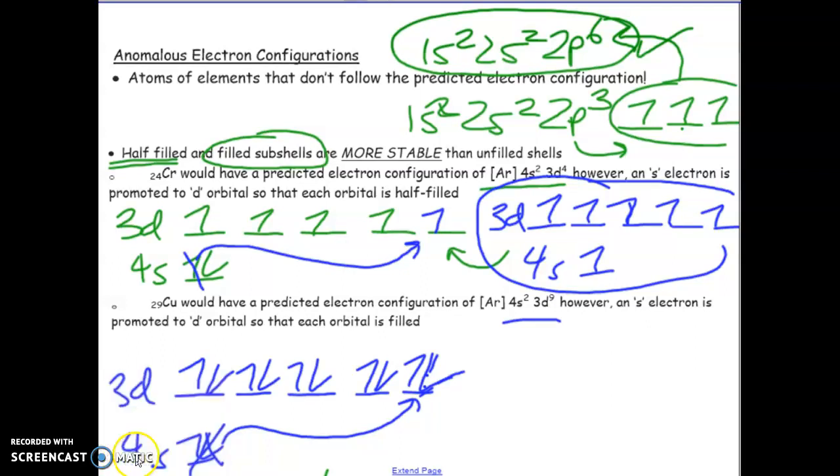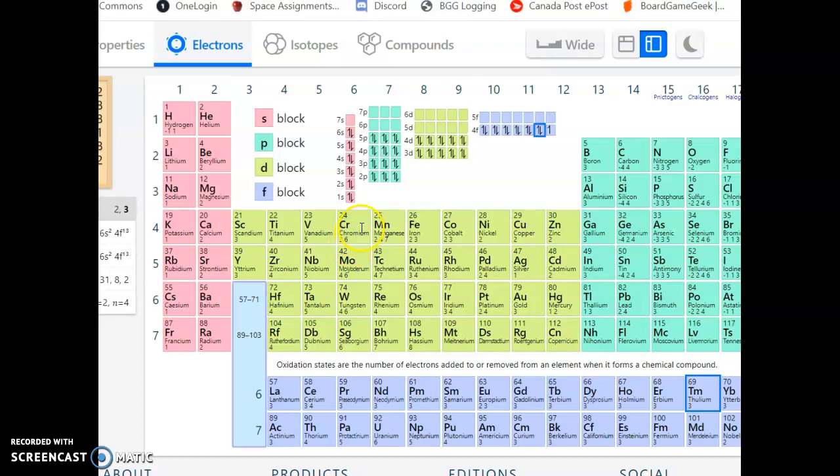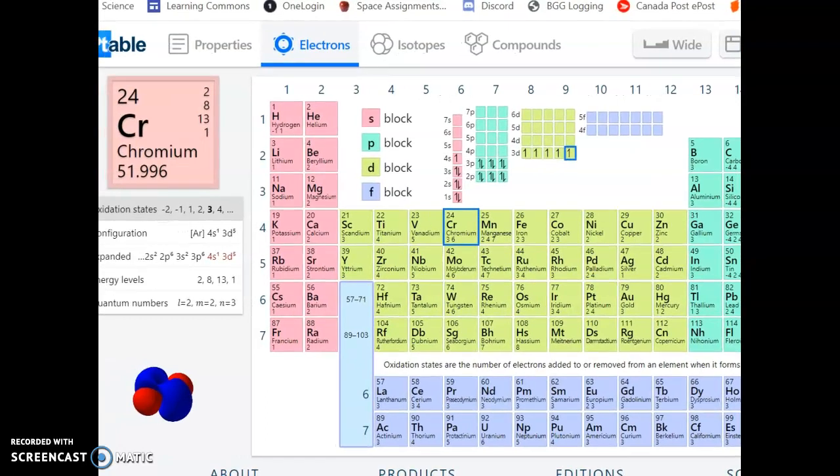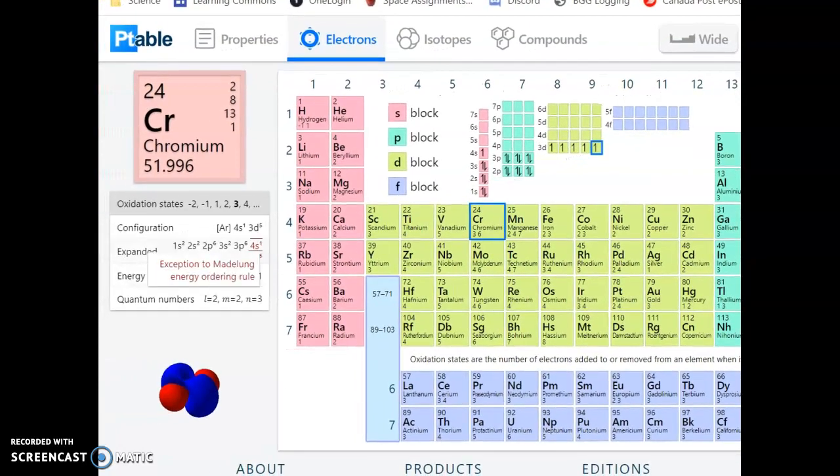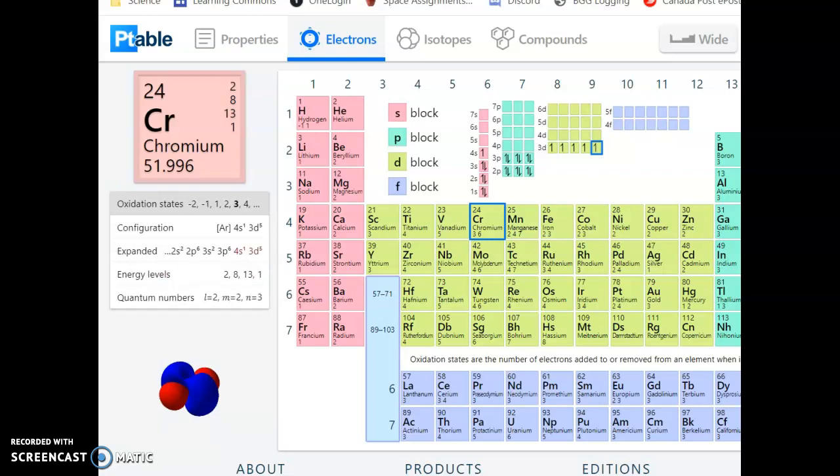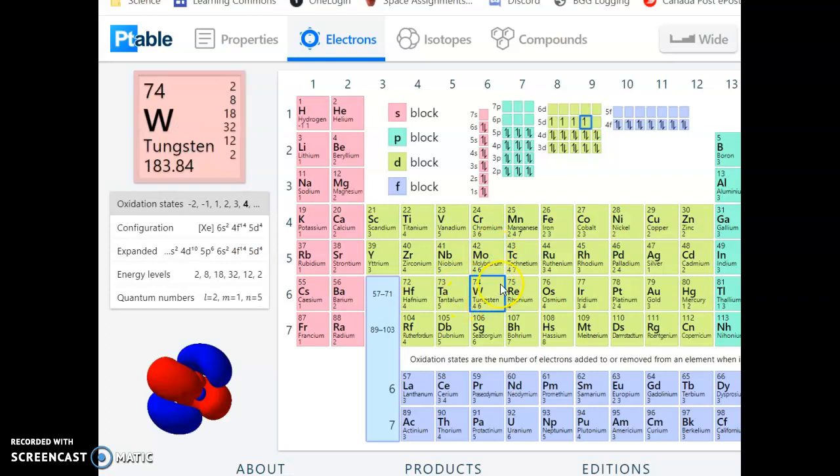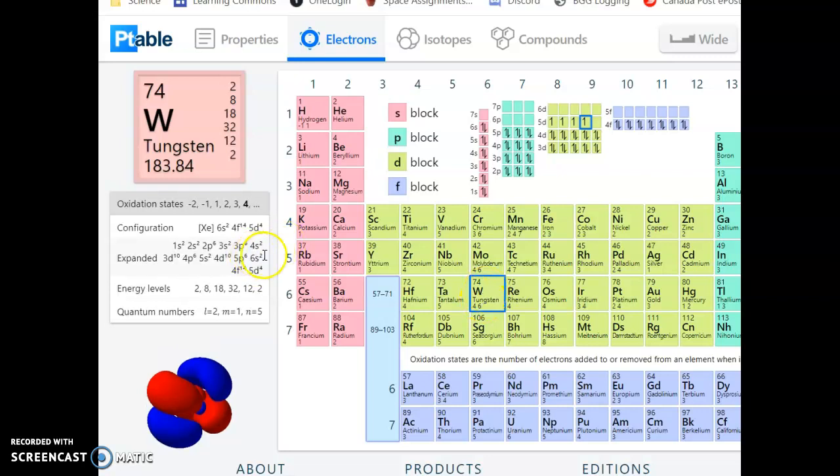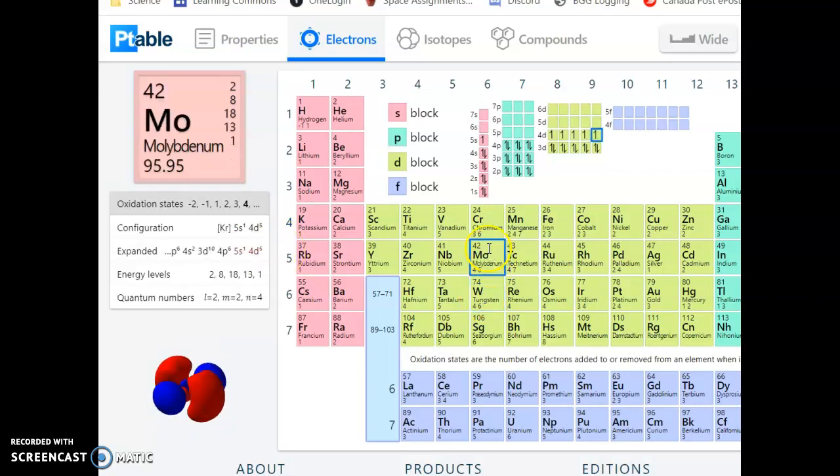Now if we go back to our periodic table site, actually it will show the anomalies. If we go to chromium for a second, notice 4s is half-filled and 3d is also half-filled. I'm actually going to go over here for a second. Look at the expanded electron configuration. This is an exception to the energy ordering rule. Notice it's highlighted in red. This is an anomalous element. And actually, every element that is in its group - oh, maybe tungsten is able to follow that rule. Strange. Anyway, typically it's everything that's in the same column because they follow the same pattern.